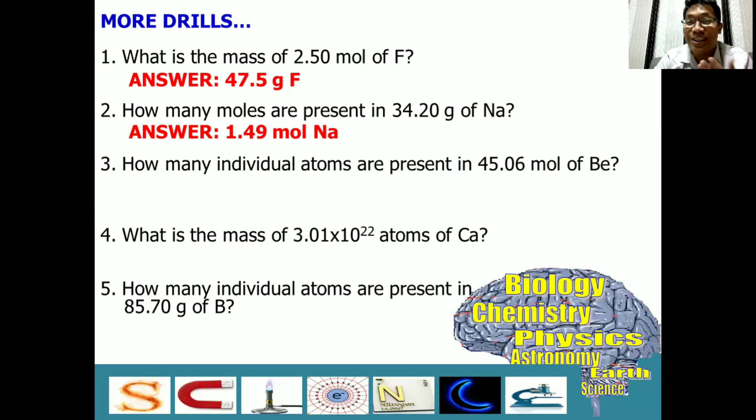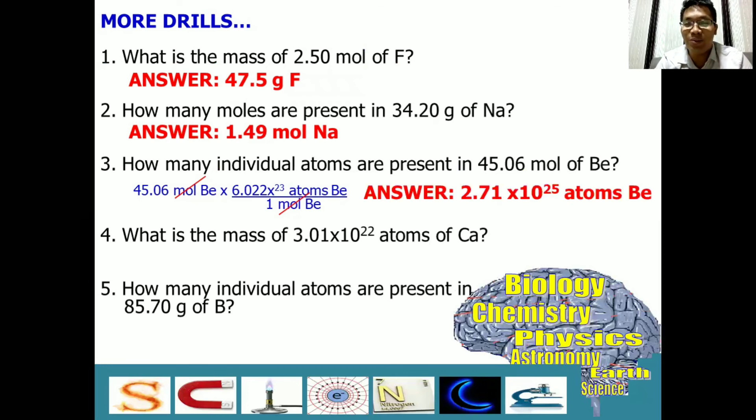In our discussion a while ago, I did not include this process. But as you apply the conversion of individual atoms to mass, you will get this process. This is our solution for number three. Since the given is 45.06 mole already, we will just directly multiply it with Avogadro's number. And we can do the cancellation of mole, and what remains is atom, which is equal to 2.71 times 10 raised to 25th power. And our unit again is atom.